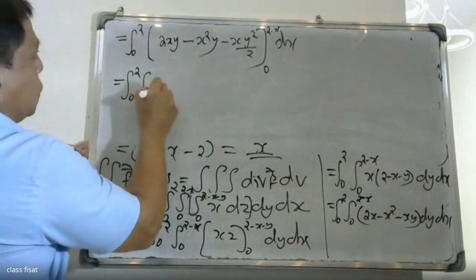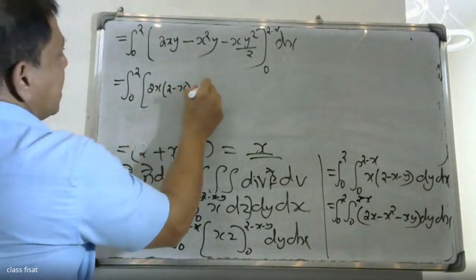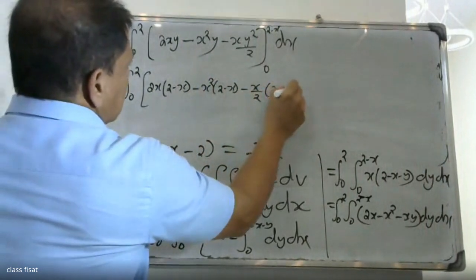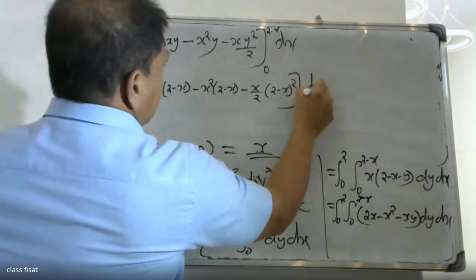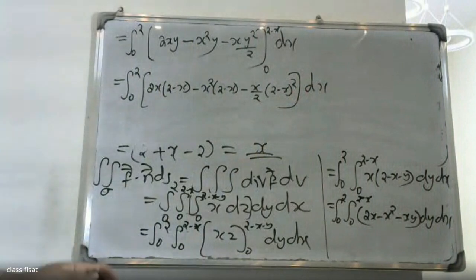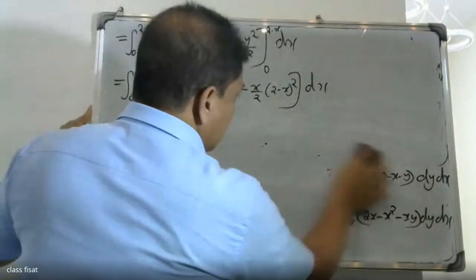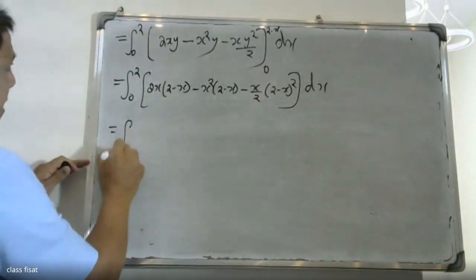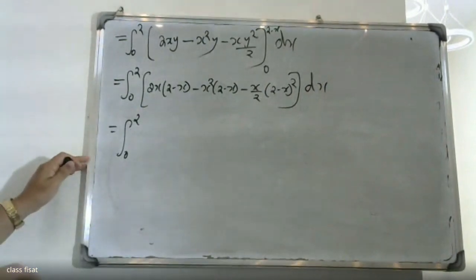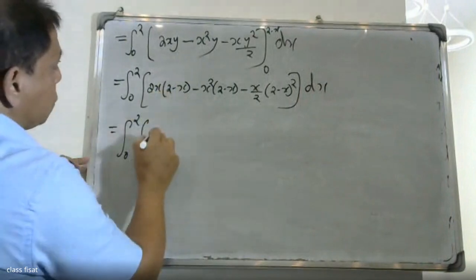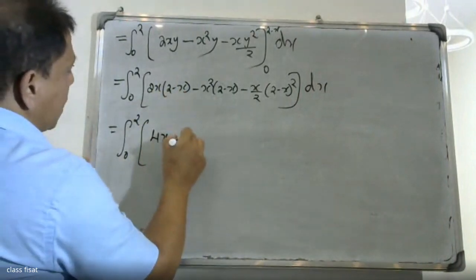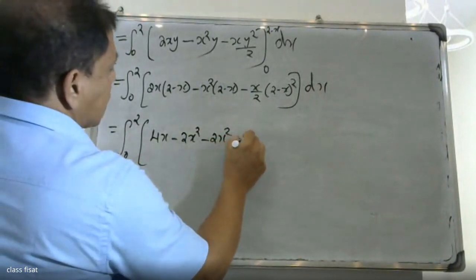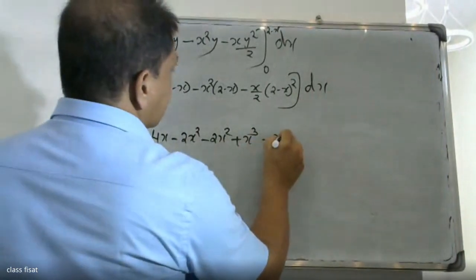Substituting the limit y = (2 - x): 2x(2 - x) gives 4x - 2x², minus x²(2 - x) gives -2x² + x³, minus x(2 - x)²/2. Then integrating from 0 to 2, the bracket expands to: 4x - 2x² - 2x² + x³ minus further x³ terms.